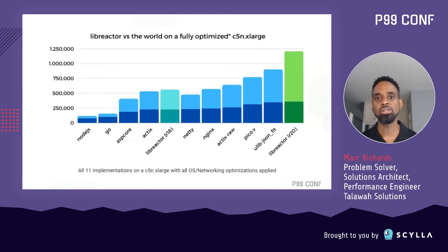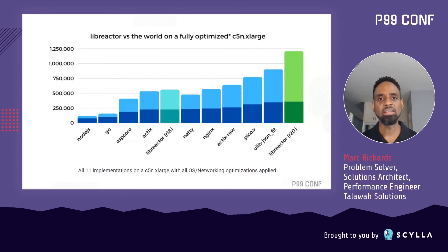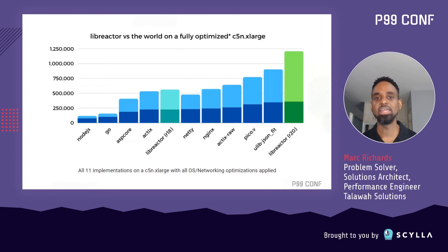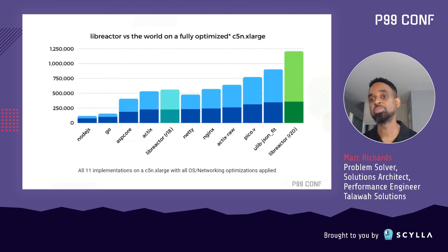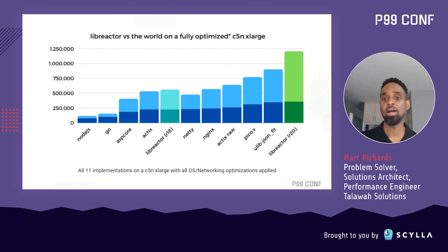This chart shows a rising tide of OSR networking optimizations lifting all ships. It also shows how well they combine with Libreactor's optimizations, propelling the fully optimized Libreactor even further ahead of the pack. The darker brown half of each bar shows the performance before the OSR networking optimization, while the top half shows what a significant impact those optimizations have had.